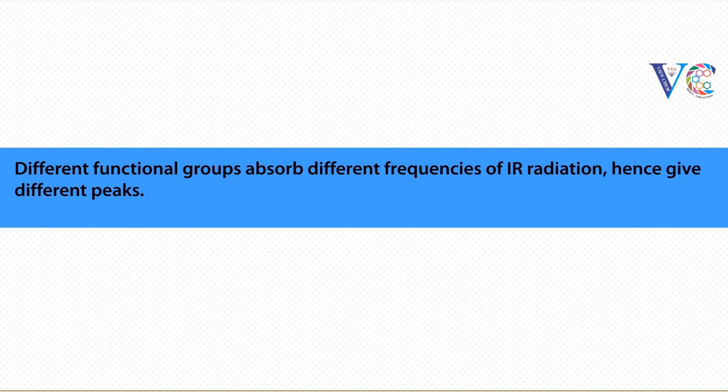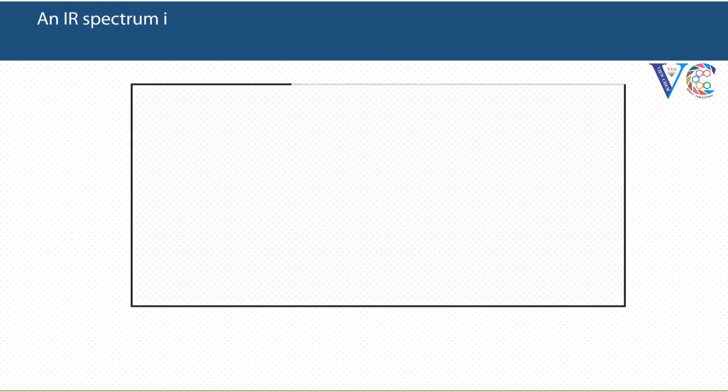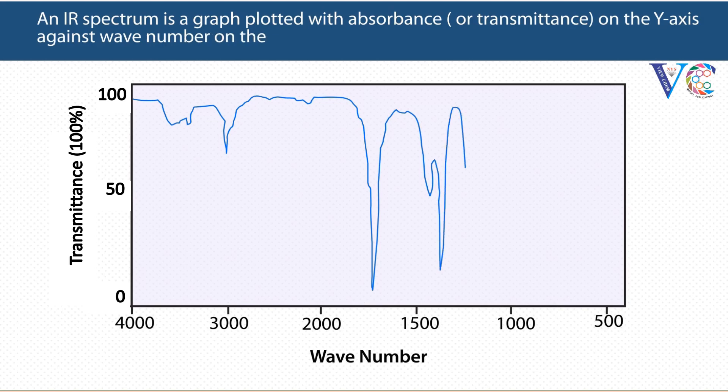Different functional groups absorb different frequencies of IR radiation, hence give different absorption peaks. Depending upon the peak position, the functional group can be identified. An IR spectrum is a graph plotted with absorbance or transmittance on the Y-axis against wavenumber on the X-axis.